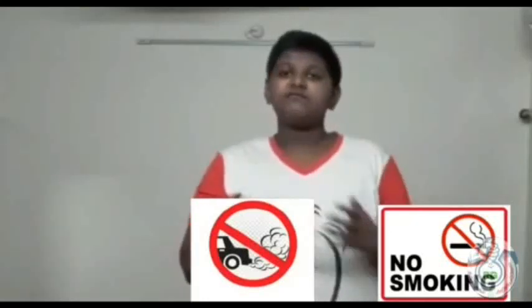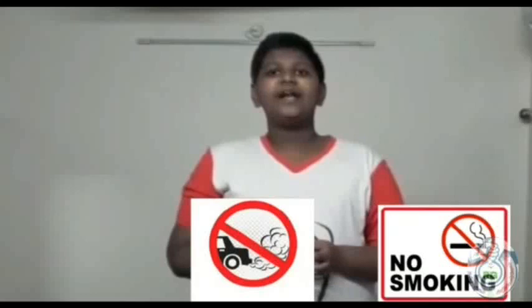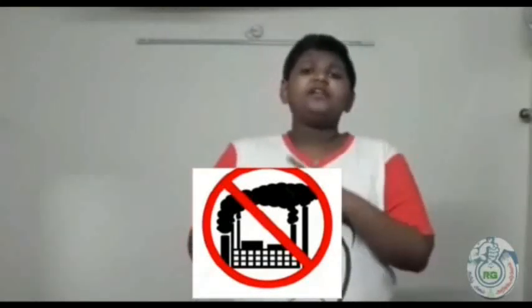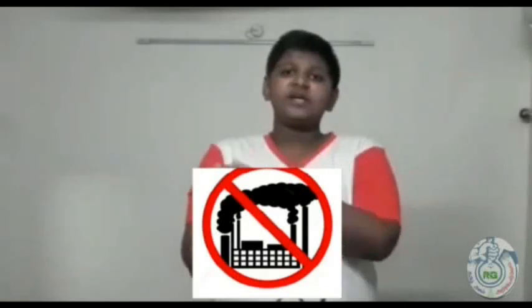Now let's talk about the precautions we should take. Reduce the usage of CO2. How can we reduce it? I will give some pictures here. Stop smoking — smoking also emits harmful CO2, so smoking should be prohibited all over the world. We should reduce the usage of transport. For example, if we are going a short distance, we can use public transport, walk, or use cycles. Then we can reduce the number of factories — in one factory we can make many things so that we can reduce the total number of factories. These measures may reduce the level of carbon dioxide. So these are the precautions we should take.